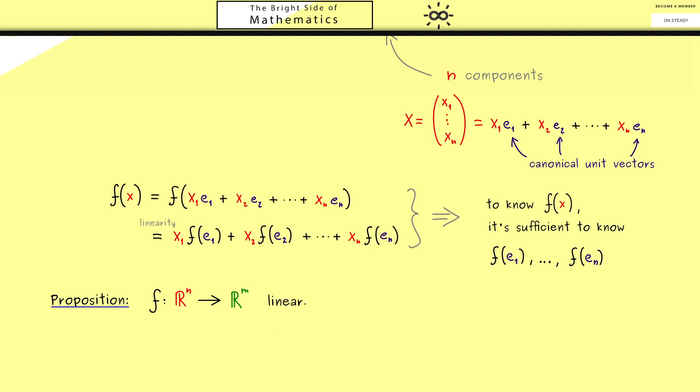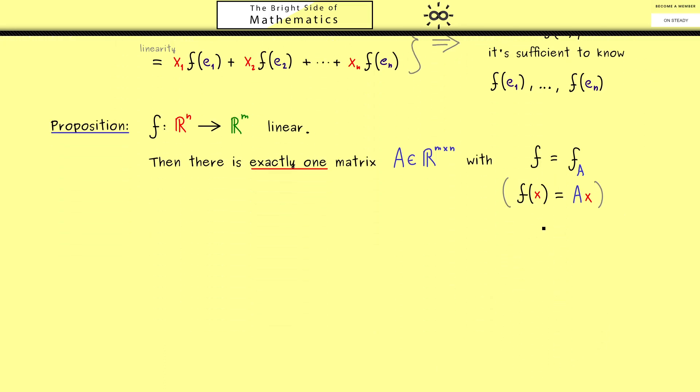Okay then in order to formulate this proposition let's assume again that we have a linear map from R^n into R^m. And then the claim is that there is exactly one matrix A. And there you might already know this matrix A should have m rows and n columns. And moreover please recall from the last video that each such matrix A induces a linear map we call f_A. And then of course the meaning of our claim here is that our linear map f is exactly f_A. So in other words if you want to calculate f of x, then you can just multiply the matrix A with the vector x. So in summary what is written here is that there is exactly one such matrix A such that this equation here is fulfilled for all vectors x in R^n.